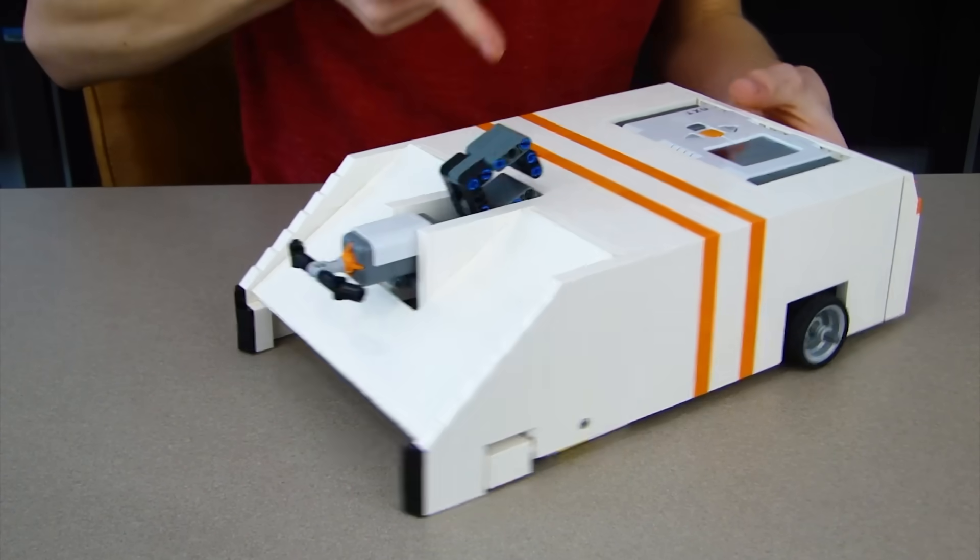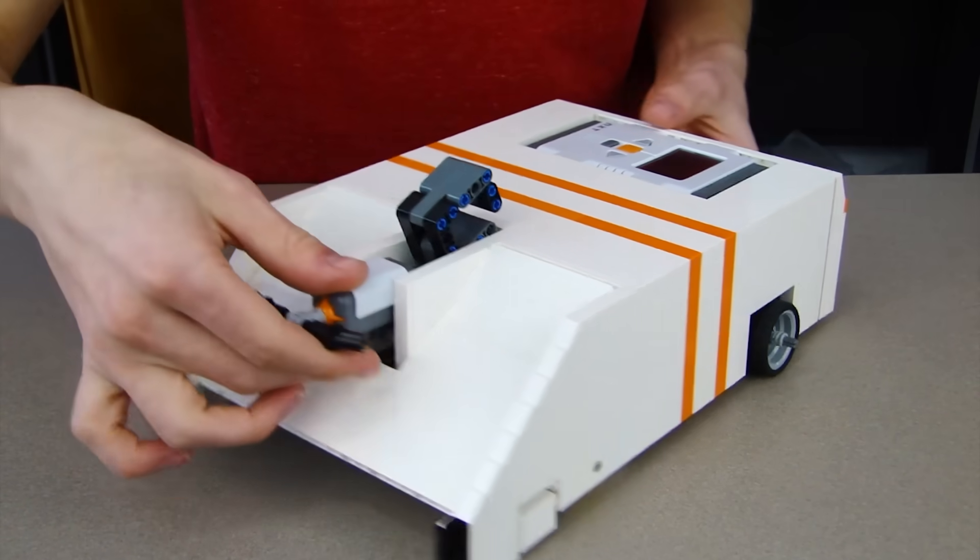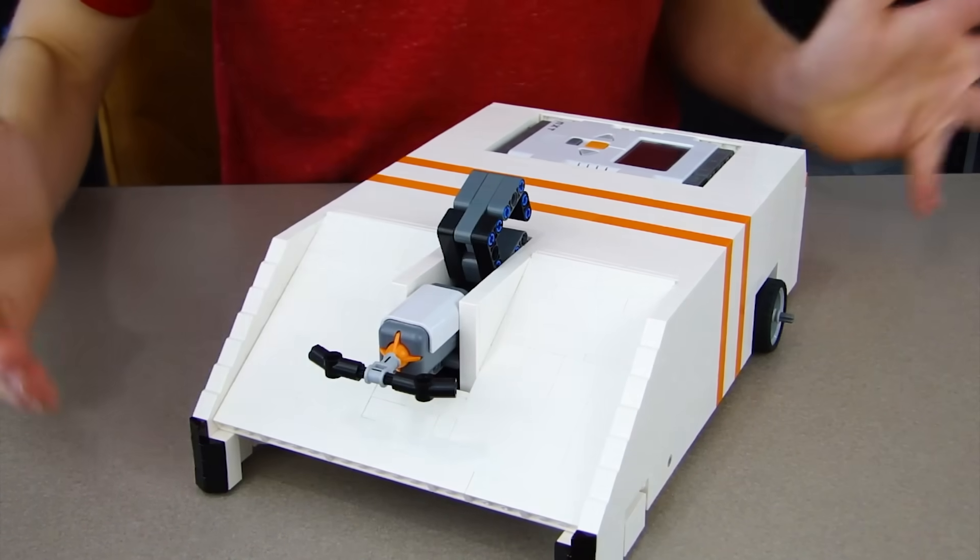You can see that the orange accents kind of go with the Mindstorms brick color. I tried to go for a theme here. This little button up front can make it so maybe I can make some code with it. This is a handle right here. It makes it really easy to pick up.